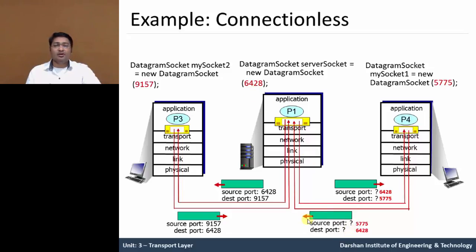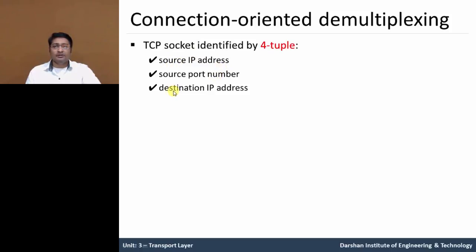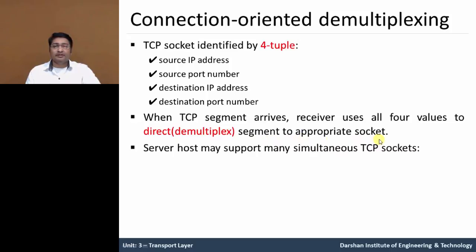Now let us discuss connection-oriented demultiplexing. In connection-oriented demultiplexing, we need a four-tuple to identify a TCP socket. The first tuple is the source IP address, second is the source port number, third is the destination IP address, and fourth is the destination port number. When a TCP segment arrives at the receiving side, the receiver uses all four values to direct the segment to the appropriate socket. A server host may support many simultaneous TCP sockets, meaning it can handle many TCP socket requests. Each socket is identified by its own four-tuple, so there is no mix-up.